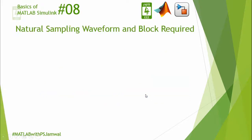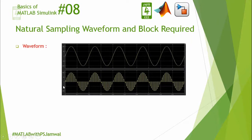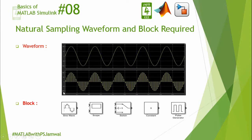First of all we will discuss about the natural sampling waveform and the blocks required to generate it. This waveform consists of samples with amplitude equal to the amplitude of the input supply voltage, that's why it is known as natural sampling waveform. To generate this waveform using MATLAB Simulink we require 5 blocks, out of which 4 have been discussed in the 6th lecture. In this lecture we will discuss about the pulse generator.